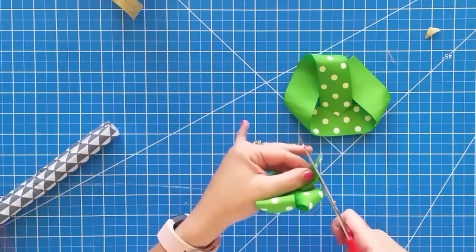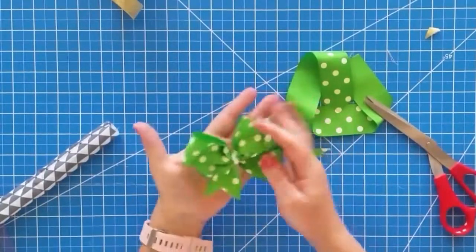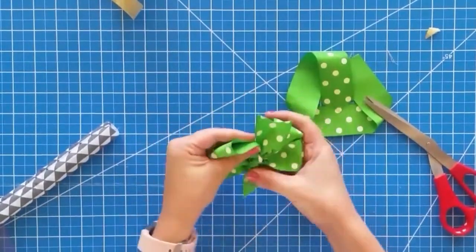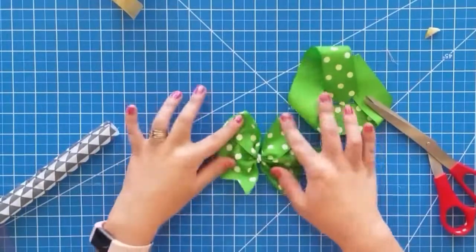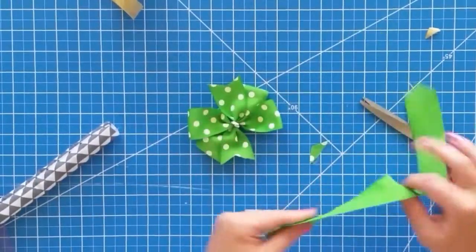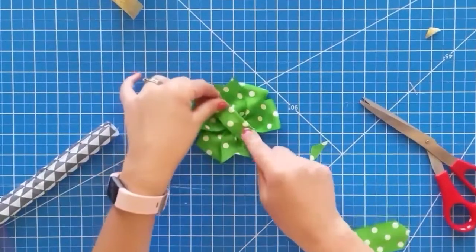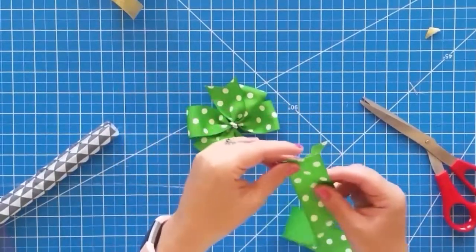And now the ends are done and all we have to do is wrap a piece around the middle to hide that wire. So you could just cut off a little piece of ribbon and wrap it around, or I really like the knot look. So what I'm going to do is take the leftover ribbon and I'm just going to tie it in a knot.